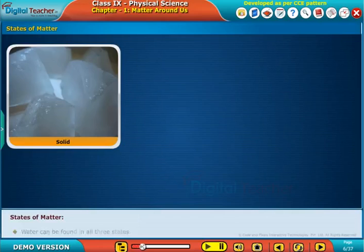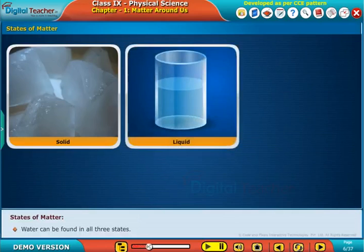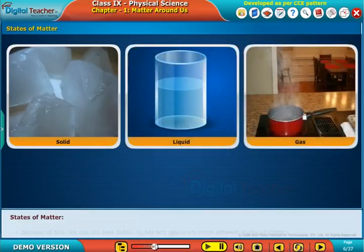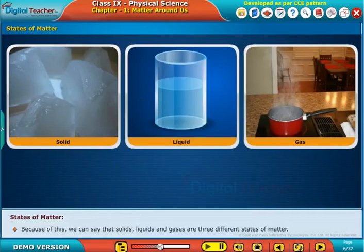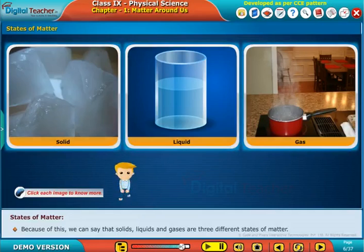Water can be found in all three states. Because of this, we can say that solids, liquids, and gases are three different states of matter. Click each image to learn more.